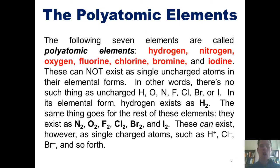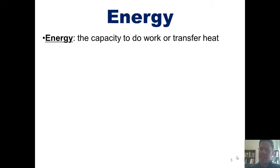These elements cannot exist as single uncharged atoms in their elemental forms. In other words, there's no such thing as uncharged H, O, N, F, Cl, Br, or I. In its elemental form, hydrogen exists as H2. The same thing goes for the rest of these elements. They exist as N2, O2, F2, Cl2, Br2, and I2. These can exist, however, as single charged atoms, such as H+, Cl-, Br-, and so forth. Now, this rule applies uniquely to polyatomic elements and not the remaining elements on the periodic table.